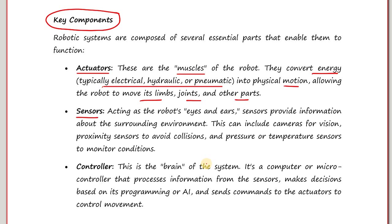Next we have sensors — these are basically the robot's eyes and ears. Sensors provide information about the surrounding environment, just like the five sense organs of a human. They can include cameras for vision, proximity sensors to avoid collision, and pressure or temperature sensors to monitor conditions.